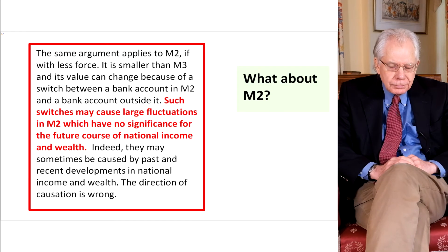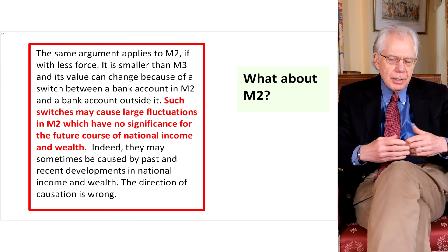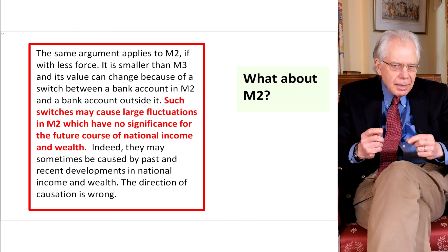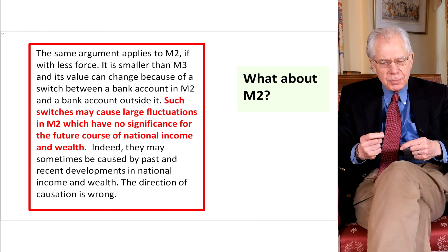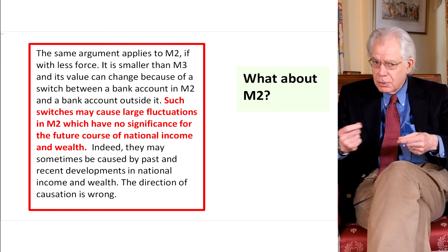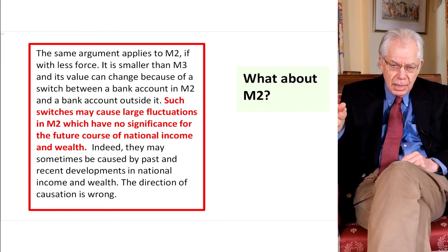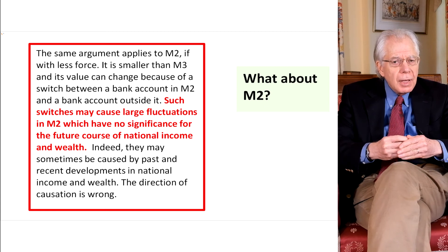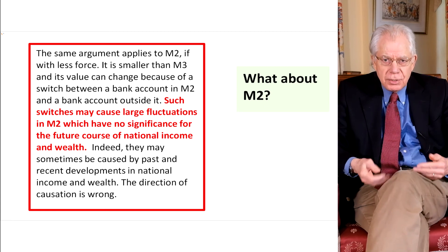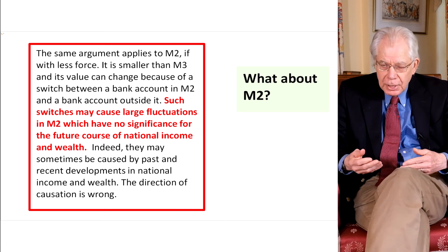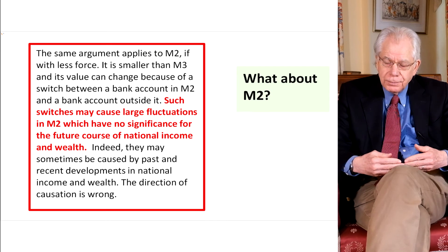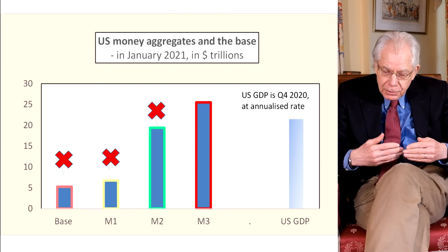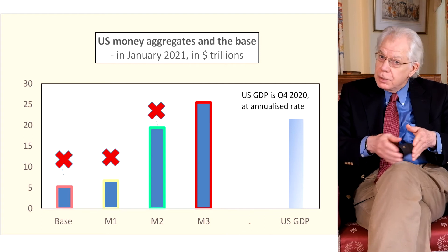What about M2? Well, M2 is much larger — in America at the moment it's about 20 trillion dollars, compared with M3 at about 25 trillion dollars. But again there's this problem that M2 can change because the holders of money balances switch between a deposit held inside only M3 and the 20 trillion in M2. M2 also may be adjusting to the economy rather than affecting the future course of economic activity. So we cut out M2 as well. It's become only part of broad money, not all of broad money.